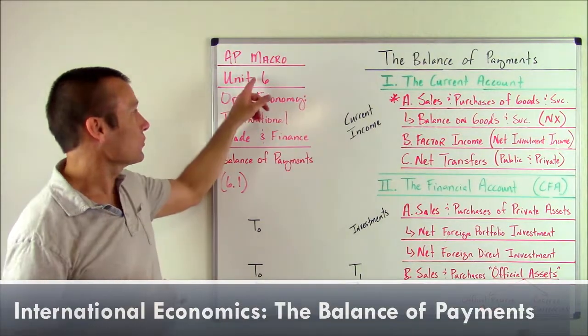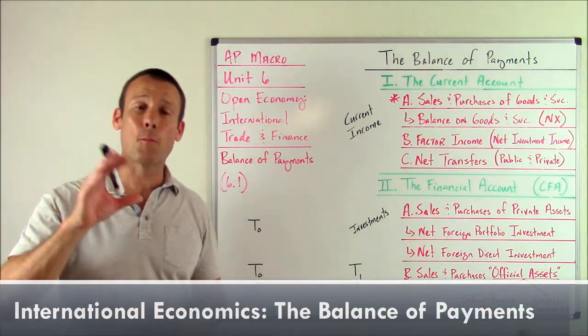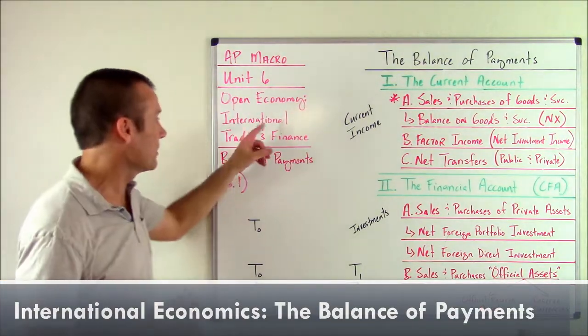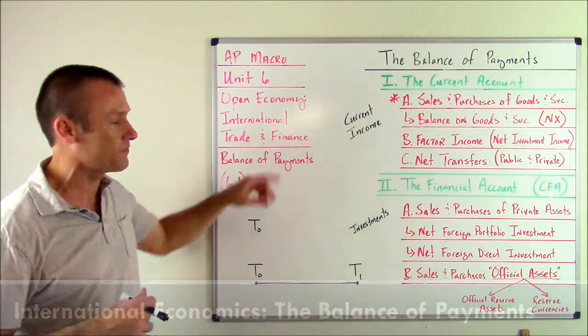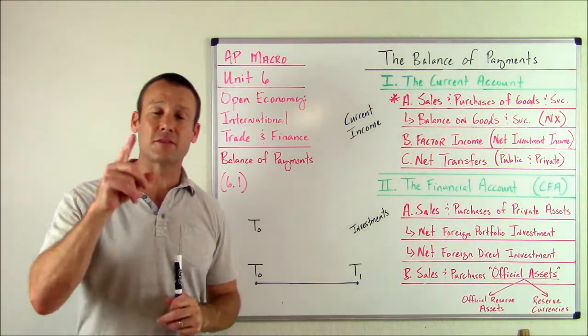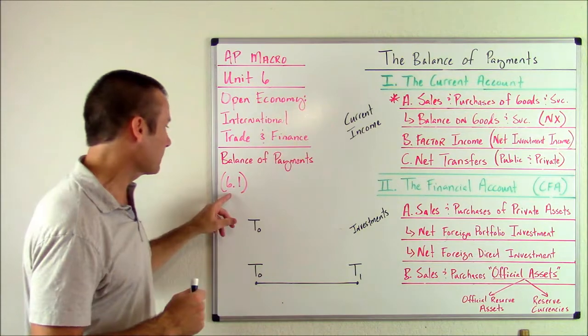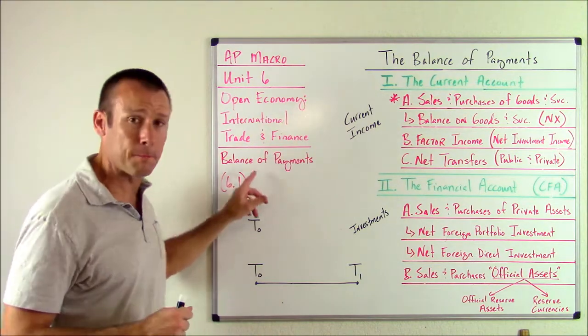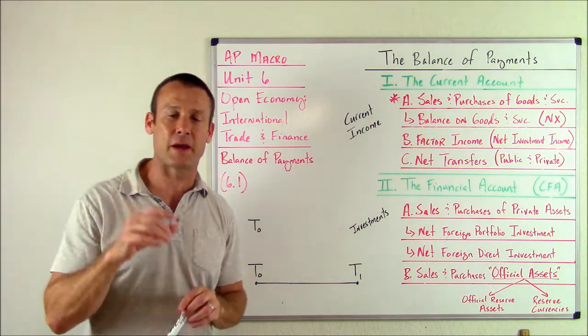Hey everybody, this is AP Macro, Unit 6 — the open economy, international trade and finance. This is subunit 6.1, the balance of payments.